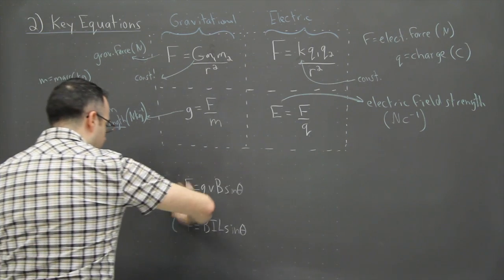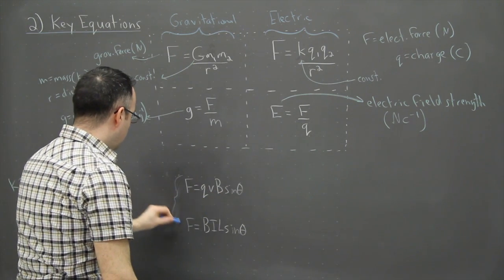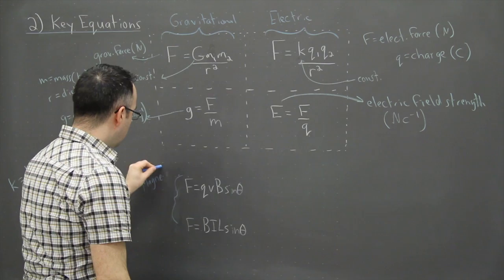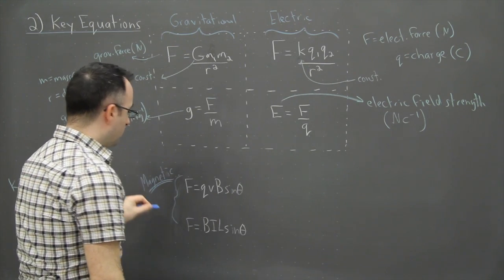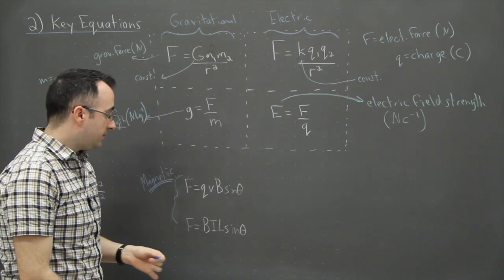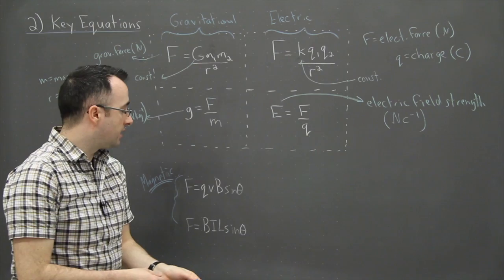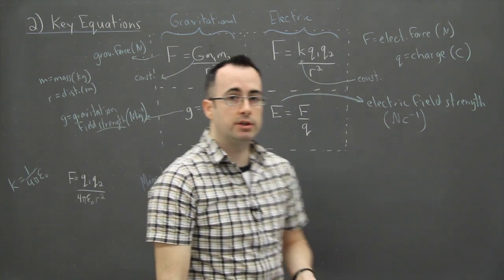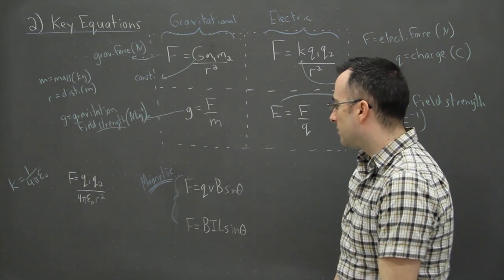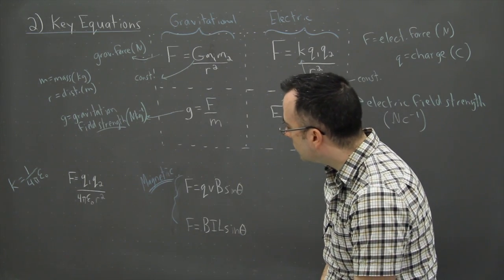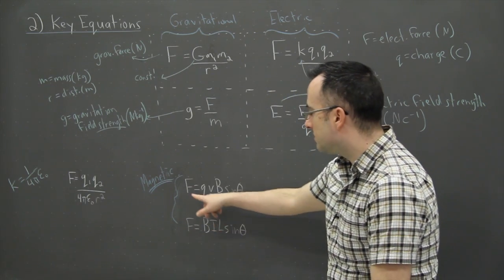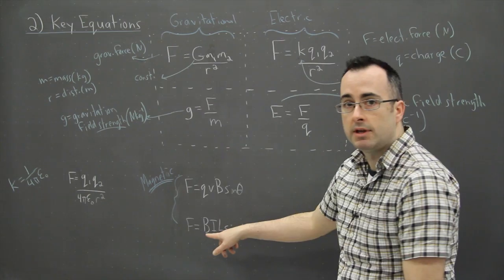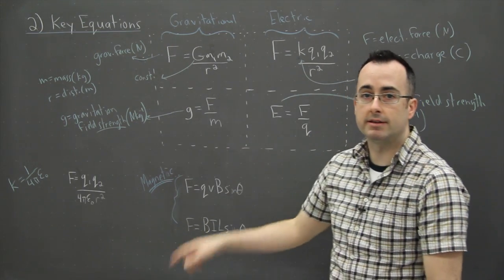Then we have the magnetic equations. I'm going to make those blue and label them as magnetic. Those are really important as well, and I'm going to do another video to show you what those actually stand for. This first magnetic equation will give you a magnetic force, and the other one will also be a magnetic force depending on a few other things.